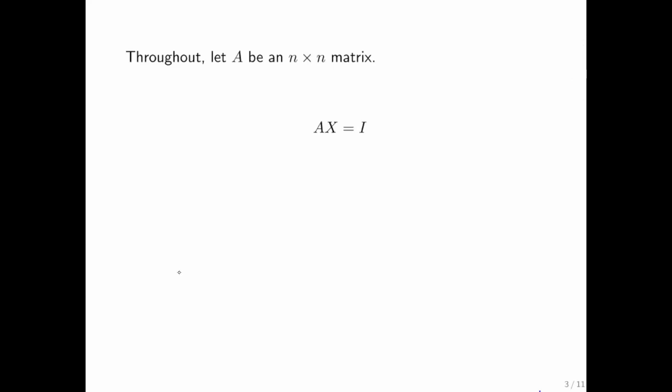Recall that to compute the inverse of a matrix, what you do is you find a matrix such that A times that matrix is the identity. And what you can do is partition that matrix by columns and do the same thing with the identity matrix. And then you want to solve A x equals b with right-hand sides, the unit basis vectors, solving for each of the columns of the inverse of the matrix.